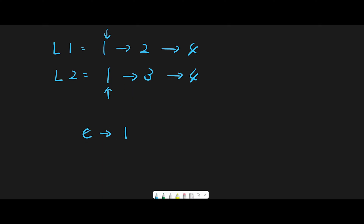Then the current pointer moves to next. We used this node, so the next node to compare should be two. We compare two versus one, and one is smaller than two, so we connect this node here. Then current pointer moves to next.